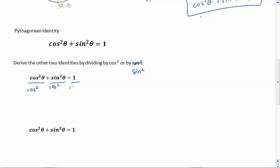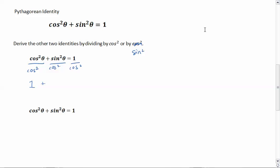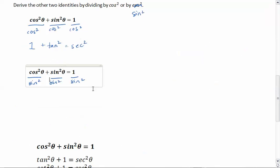If we divide everything in the identity by cosine squared, we get 1, because cosine squared over cosine squared equals 1, and sine squared over cosine squared equals tangent squared, and 1 over cosine squared equals secant squared. So that gives us our second identity. Now let's divide by sine everywhere: cosine over sine is cotangent, so cosine squared over sine squared gives us cotangent squared, plus sine over sine is just 1, and 1 over sine squared is cosecant squared.